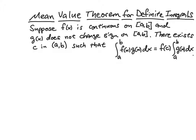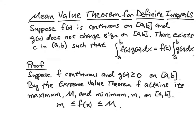Let's proceed with the proof. Since f is continuous and g(x) is greater than or equal to zero on [a,b], then by the Extreme Value Theorem, f attains its maximum and minimum values. So f is bounded below by little m and bounded above by capital M. Since f is continuous, we'll use the Intermediate Value Theorem later to point out that f(x) actually attains those values between little m and big M.